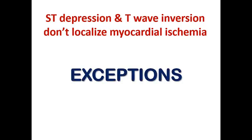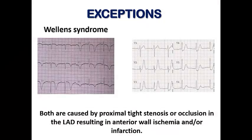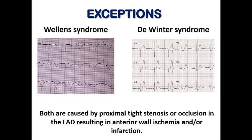ST depression and T wave inversion don't localize myocardial ischemia, but with few exceptions. The first exception is Wellens syndrome, in which there is deep symmetrical T wave inversion in the precordial leads, and in other cases biphasic T waves (type A or type B). The second exception is de Winter syndrome, in which there are up-sloping ST depression in the precordial leads together with hyperacute T waves. Both are caused by proximal tight stenosis or subtotal/total occlusion in the LAD resulting in anterior ischemia.